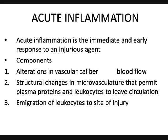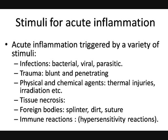What causes acute inflammation? The stimuli for acute inflammation can be infectious, due to trauma, physical and chemical agents, tissue necrosis, foreign bodies, or immune reactions. Examples include bacterial, viral, and parasitic infections; blunt and penetrating trauma; thermal injuries and irradiation; tissue necrosis such as lack of blood supply to a muscle; foreign bodies like splinters, dirt, or sutures; and immune reactions such as hypersensitivity reactions.